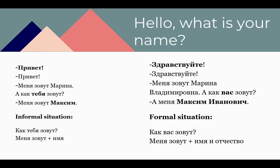Меня зовут — repeat, please. Меня зовут. Great. Here we have a girl's name: М, А, Р, И, Н, А — Марина. Let's read all together: Меня зовут Марина — My name is Marina.